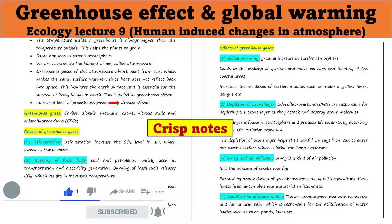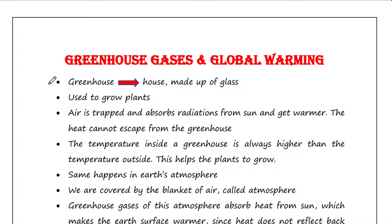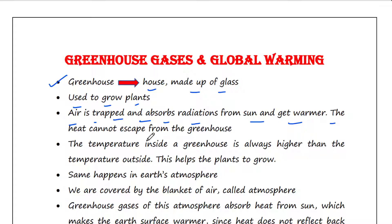A greenhouse is a house made up of glass which is used to grow plants. Inside the greenhouse, air is trapped which absorbs radiation from the sun and gets warmer. The heat gets trapped since it cannot escape from the greenhouse.